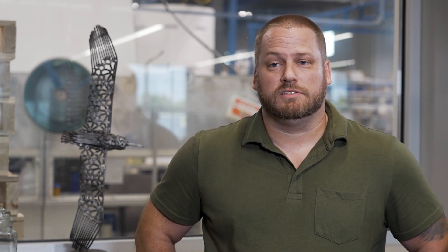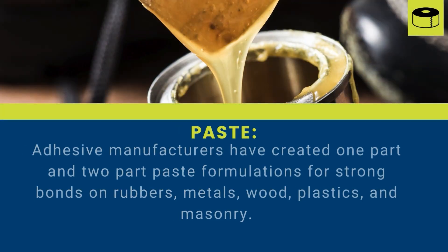Pastes come in sealed containers and are used to spread across surfaces when making bonds. Adhesive manufacturers have created one-part and two-part paste formulations for strong bonds on rubbers, metals, woods, plastics, and masonry.